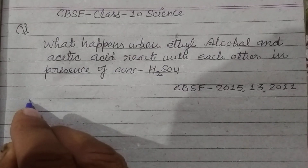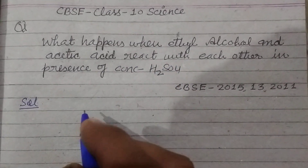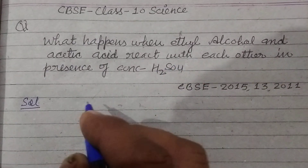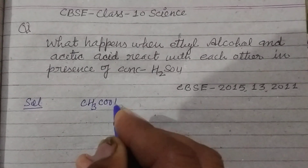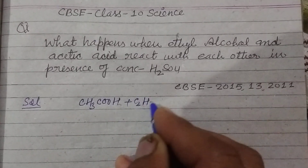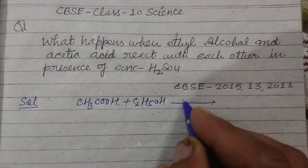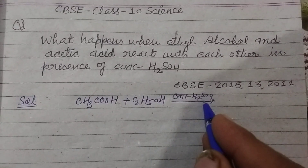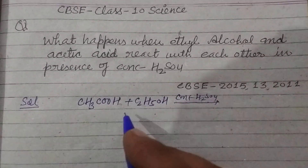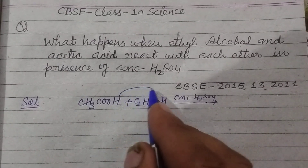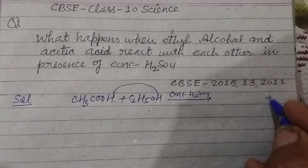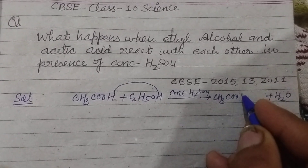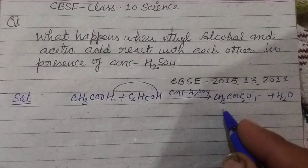In this case, when ethyl alcohol reacts with acetic acid — CH3COOH plus C2H5OH — and they react in the presence of concentrated H2SO4, you know that concentrated H2SO4 is a dehydrating agent which removes water from the given substances. So H and OH are removed, producing H2O, and the remaining part is CH3COOC2H5, which is known as the ester.